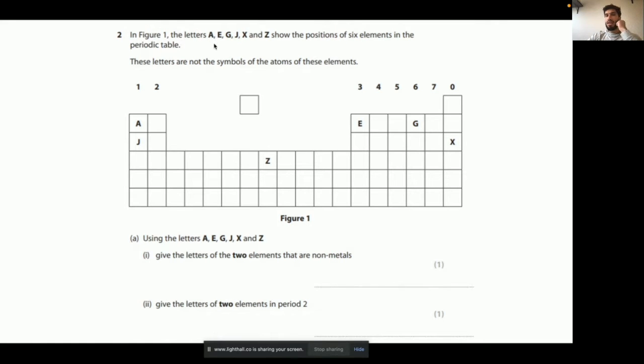In figure one, the letters A, E, G, J, X, and Z - these are random elements you can be given - show the positions of six elements in the periodic table. These letters are not the symbols of the atoms of these elements, okay? You can see that.